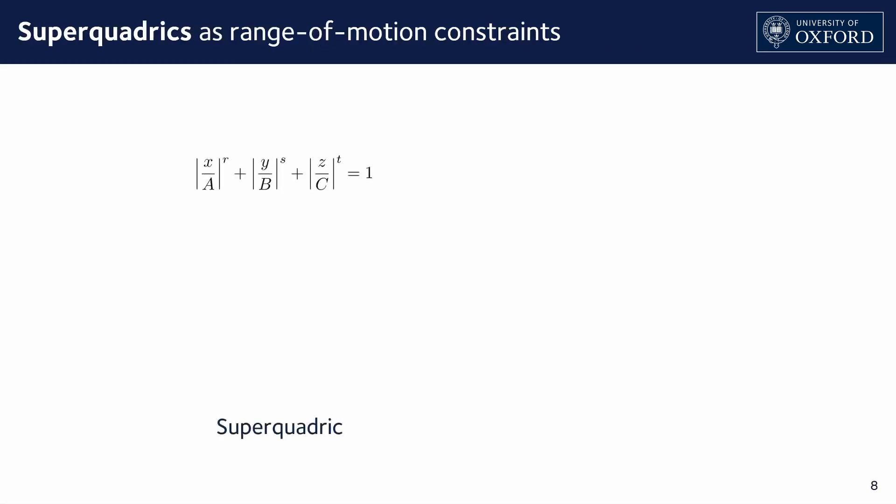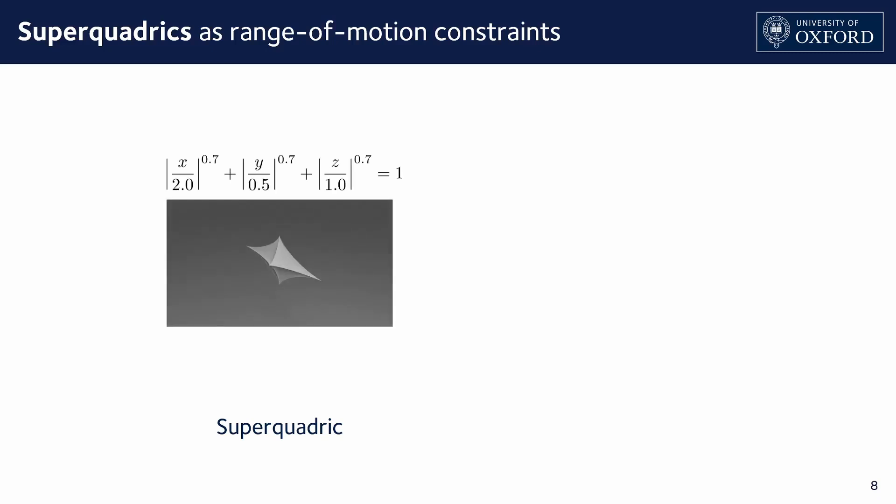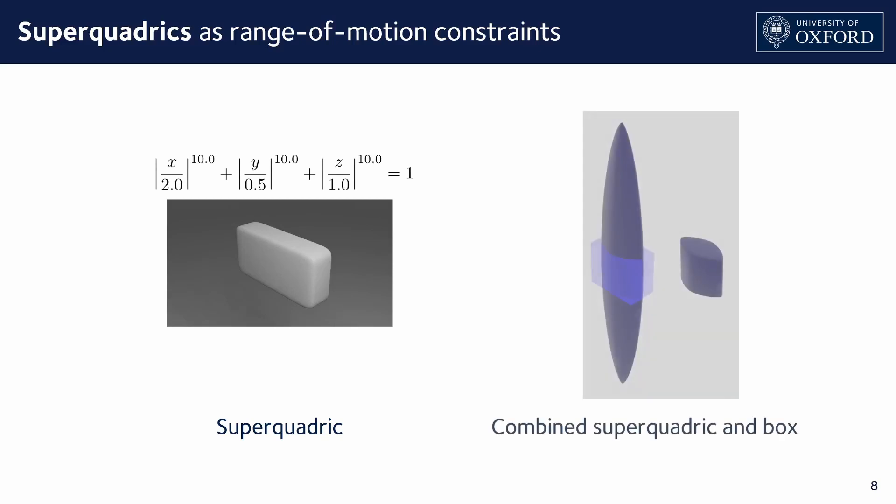We use 3D geometric objects called superquadrics which are related to 2D superellipses. Their curvature is defined by independent arbitrary coefficients and exponents which can be chosen to achieve a rounded convex box. More desirably, they can be combined with a box resulting in a more appropriate range of motion constraint for a foot.